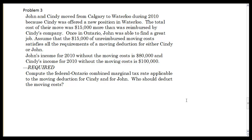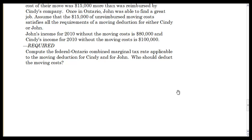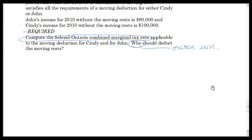Problem three is this married couple with moving expenses, and there are a number of ways we can do this. It tells us to compute the federal combined marginal tax rate, so we will do that, and then we have to decide who should deduct it. Whoever deducts it will be the person with the higher marginal tax rate when considering this deduction. There are multiple ways to do it, but I will do it this way.